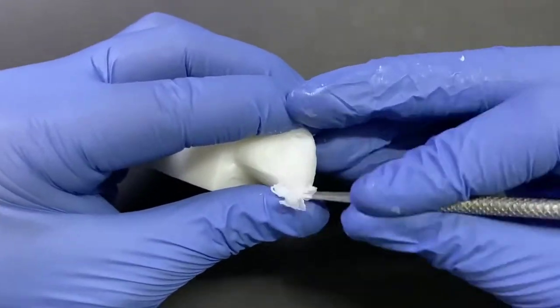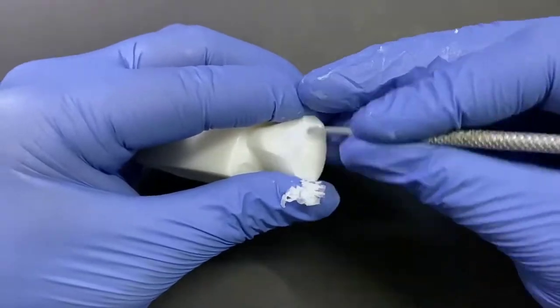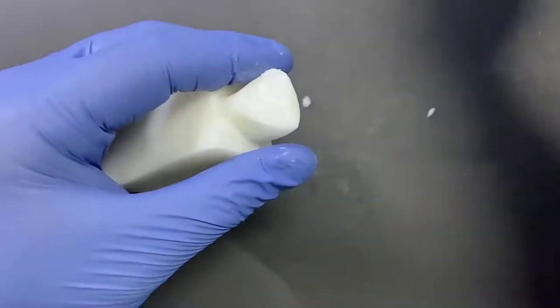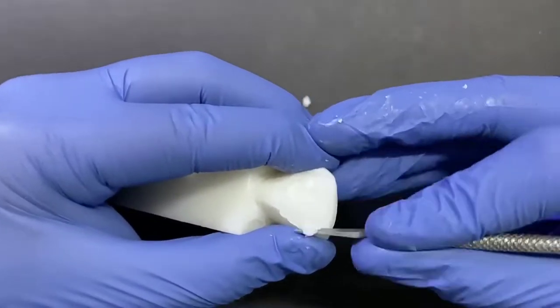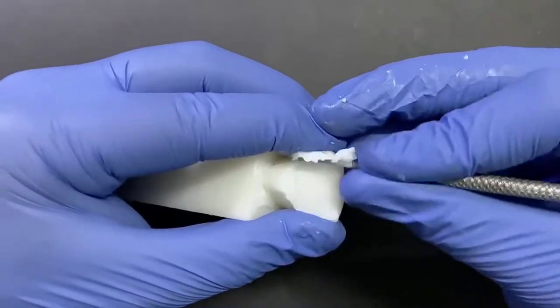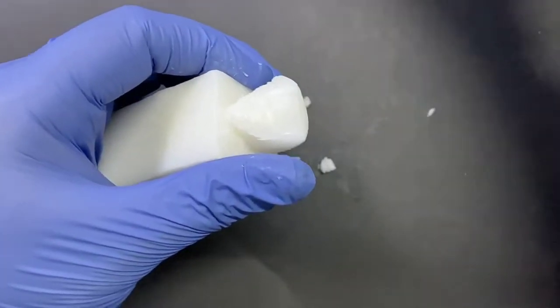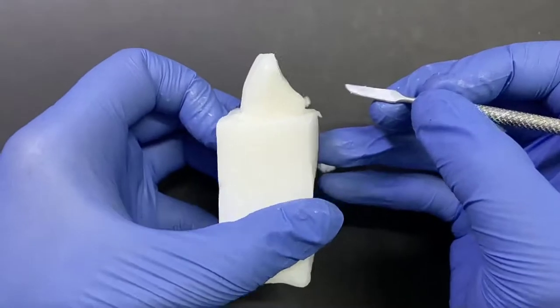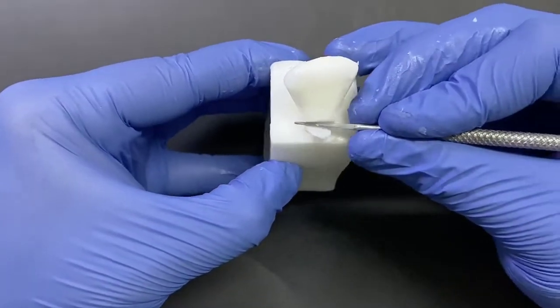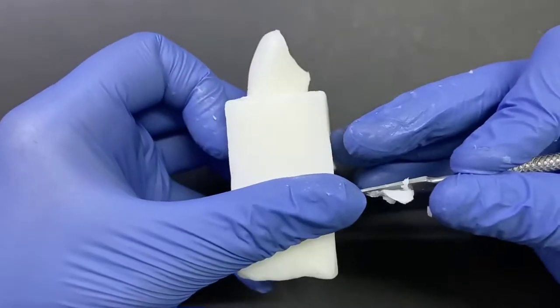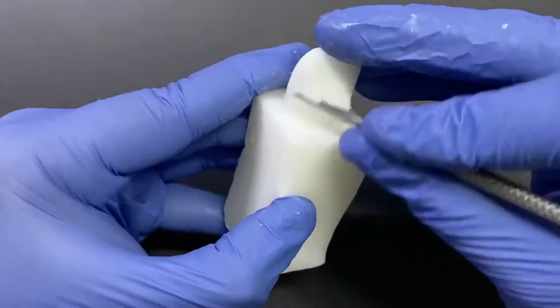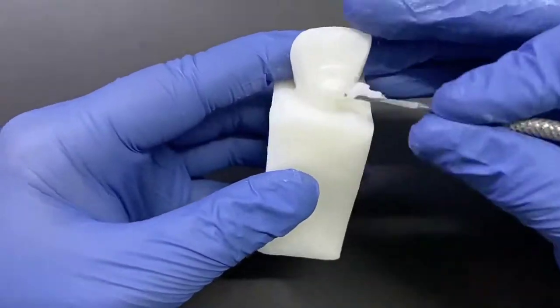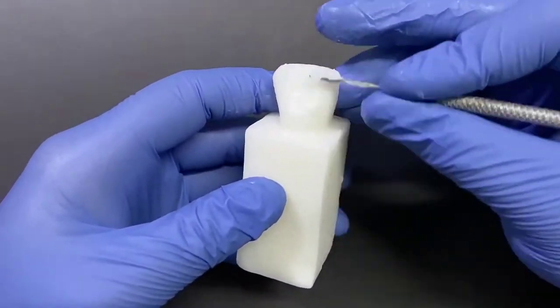Now we are clearing out the excess lingual wax and adjusting the labial-lingual width cervically by reducing the cingulum a bit and making it perfectly rounded.